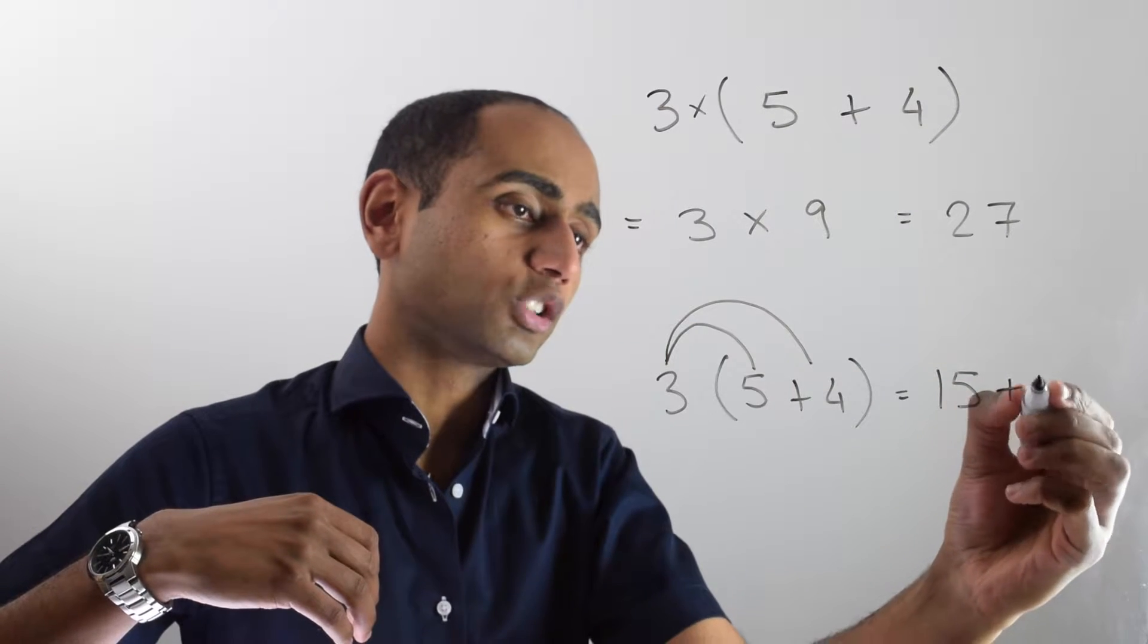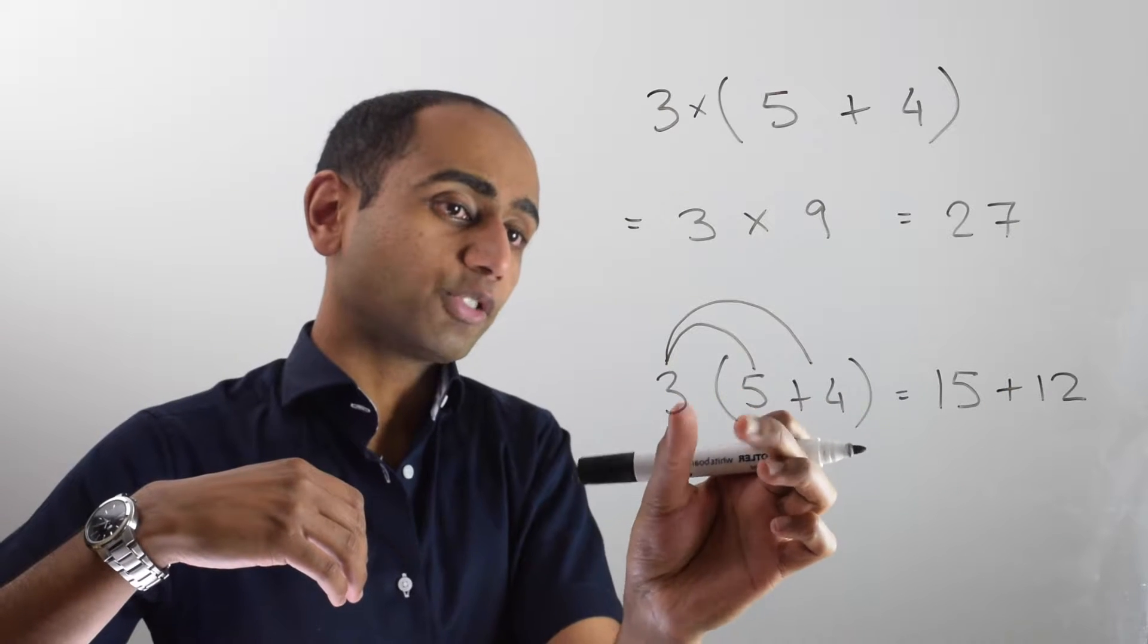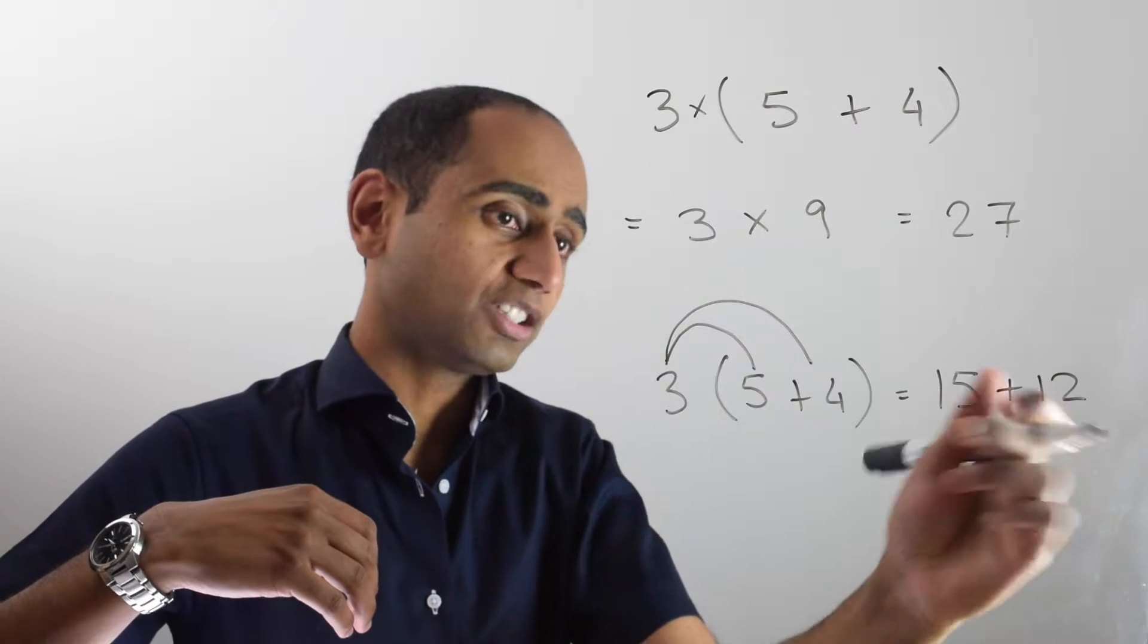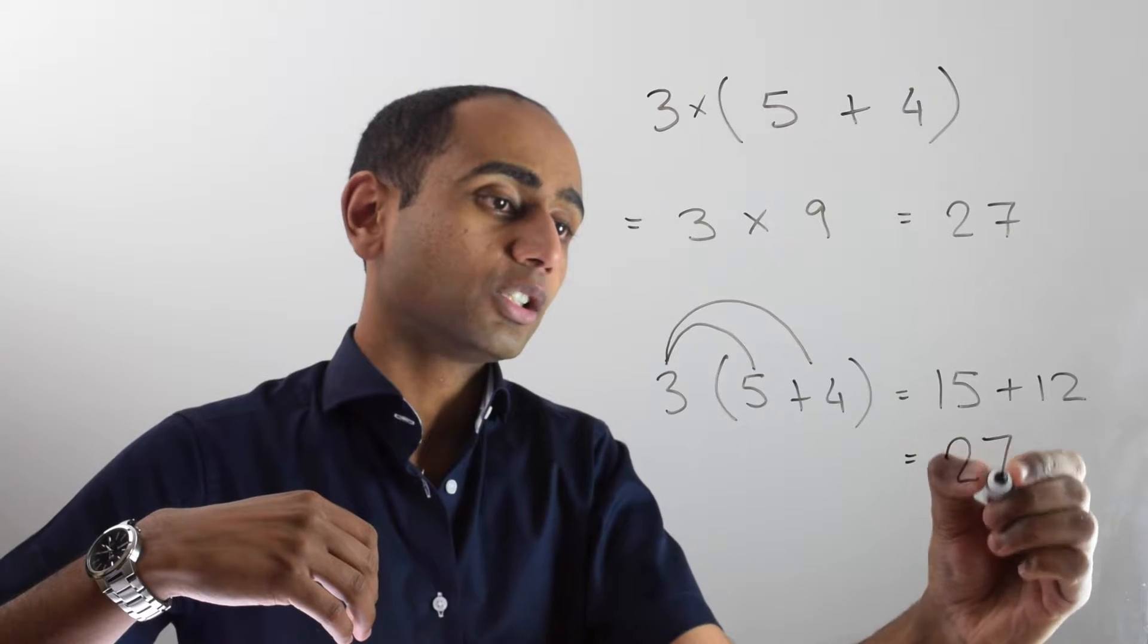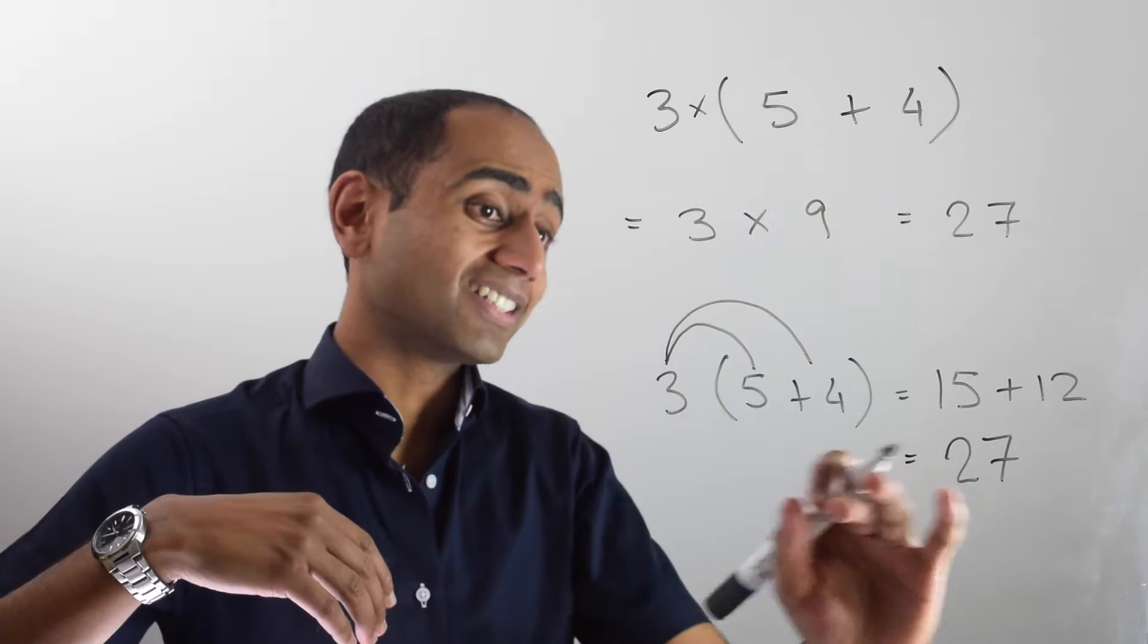So 3 times 4 is 12. So I've got three lots of 5 and three lots of 4: 15 and 12. And that makes 27. And I get the same answer.